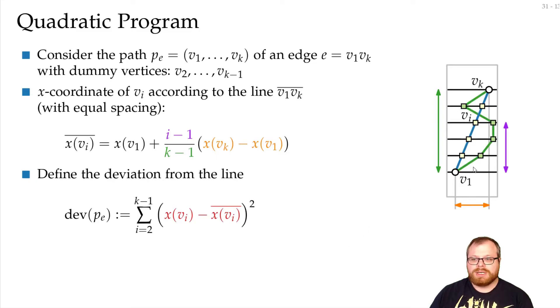So if we look at this drawing here, then we look at the deviations here, we square each of them, and then we sum it up, then we get the deviations from this line. And that's how we get a so-called quadratic program.